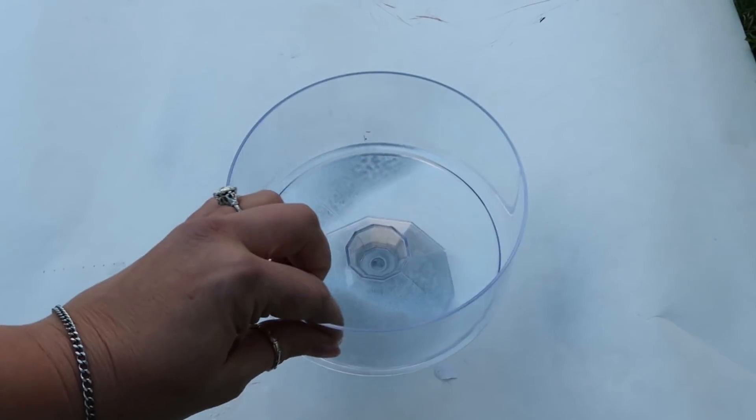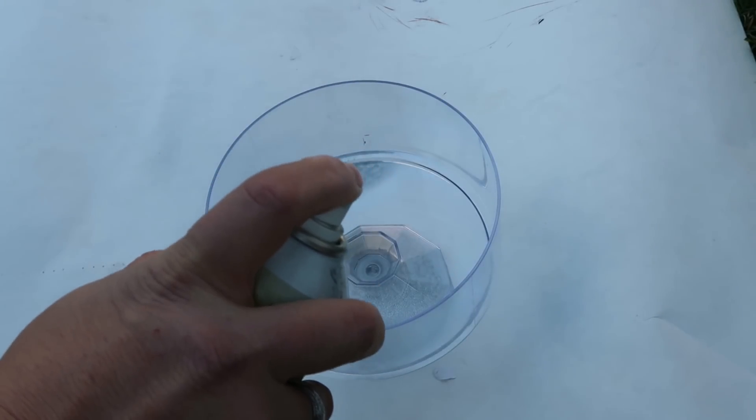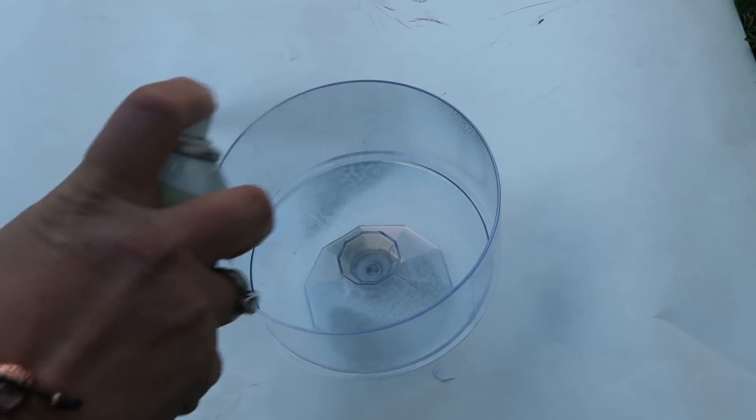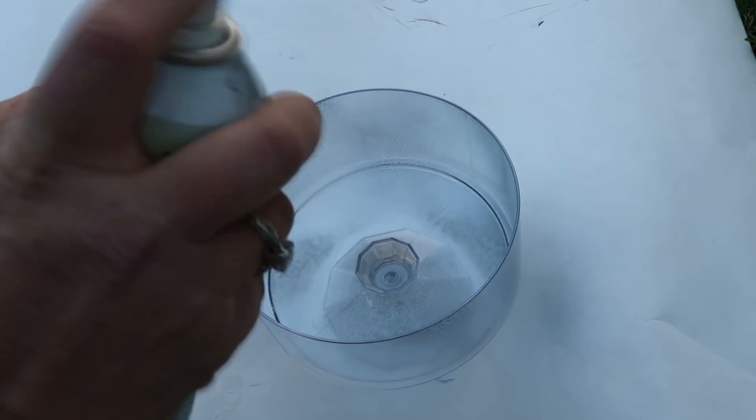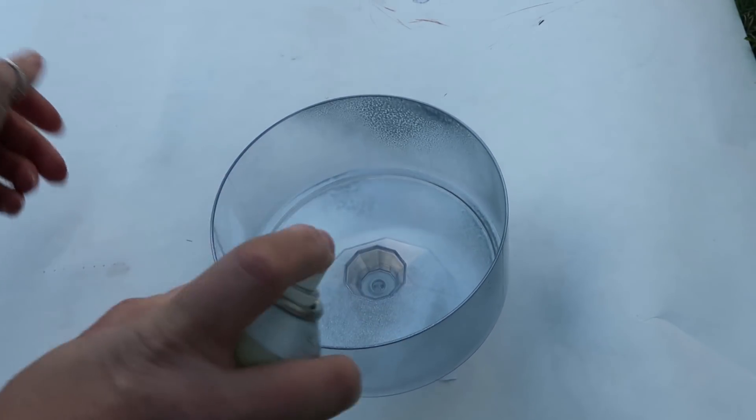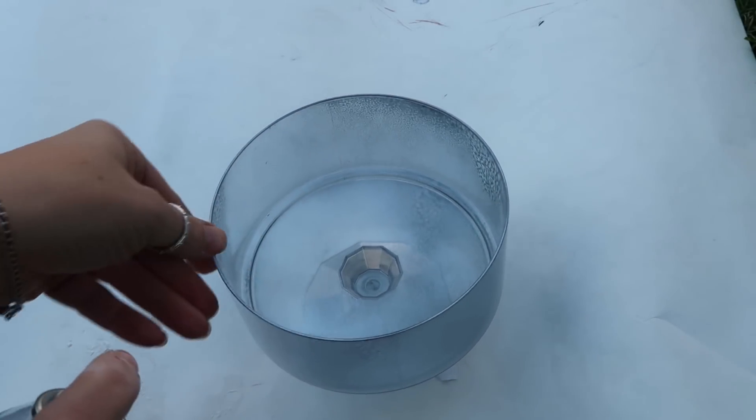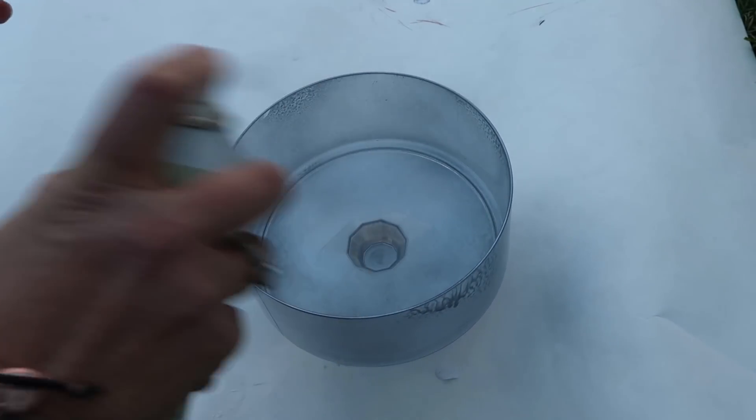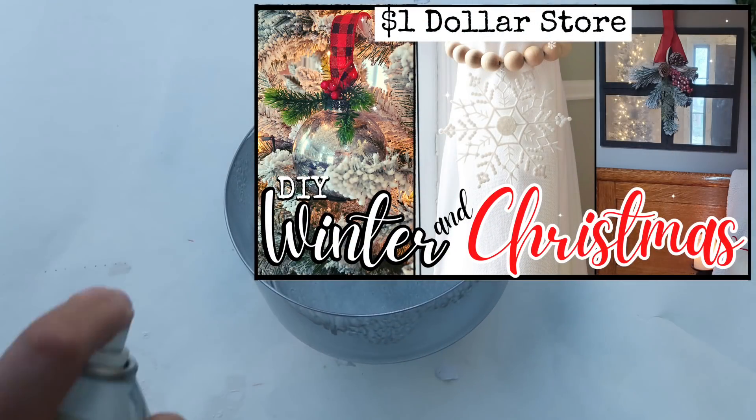So I just sprayed the bottom and now I'm just going to spray the inside because with this mirror spray or looking glass spray, you want to spray the inside or the opposite side of what's going to be facing out. Like my last DIY, go back to that if you want to see how you could make mercury glass or faux vintage antiqued mirror.